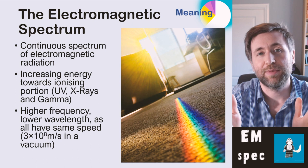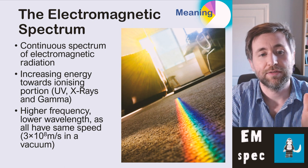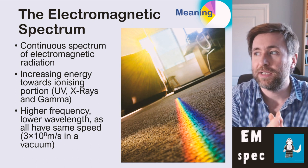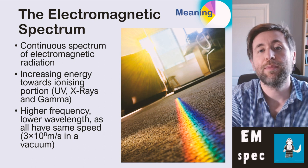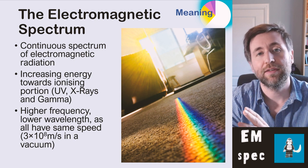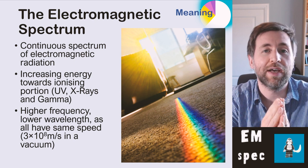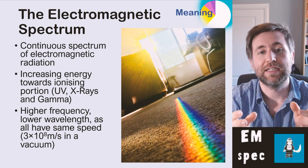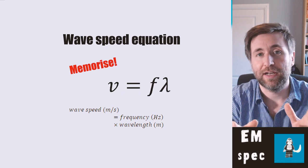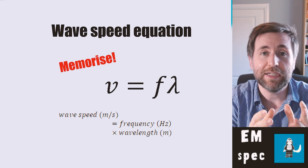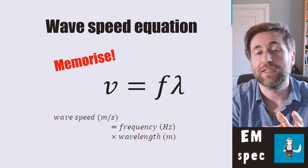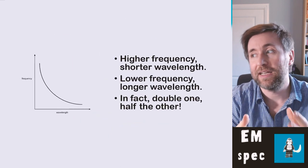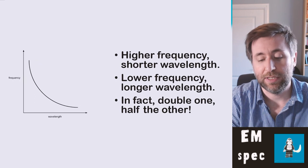Some of the electromagnetic spectrum can be dangerous. The key point you need to bear in mind is they're all exactly the same, apart from the frequency and the wavelength. They all have the exact same speed: 3×10⁸ metres per second in a vacuum. This means that if you double the frequency, you halve the wavelength — that is an application of the wave speed equation.